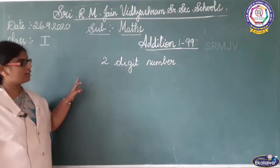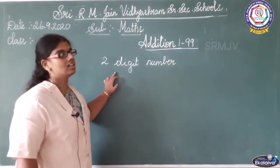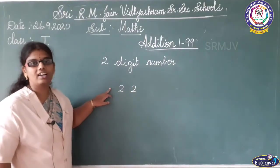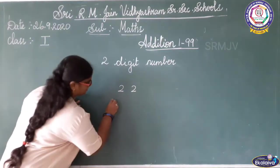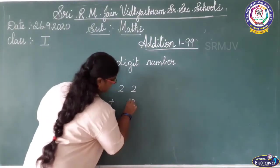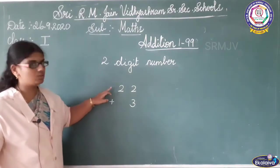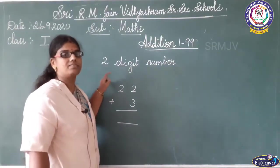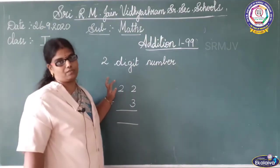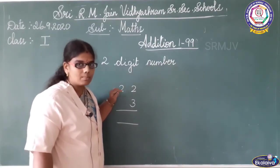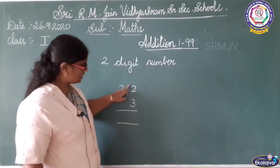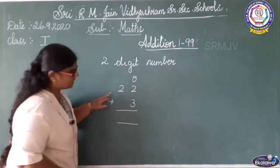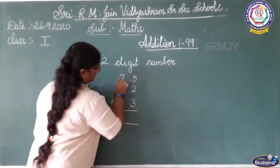Now we are going to do with two digit number. See here — 22. I have written here 22 plus 3. Now we are going to add. After writing this, first you have to write the place value of the number. What is the place value of the two? One's place. Then this two? Ten's place.